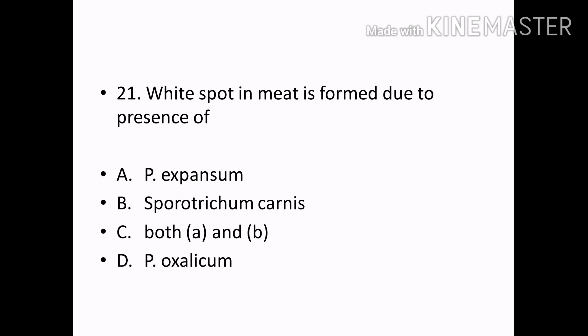White spot in meat is formed due to the presence of: Options — Expansome, Sporotrichum carnis, both A and B, Oxalicum. Correct answer: Option B — Sporotrichum carnis.